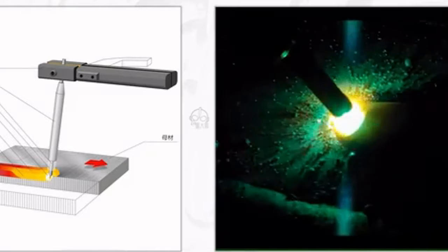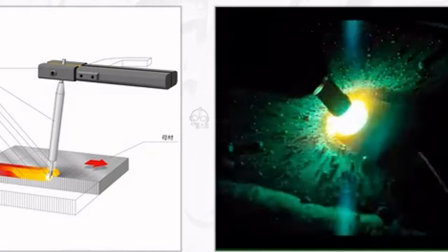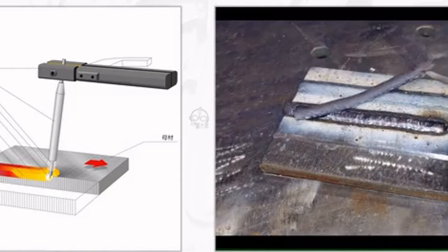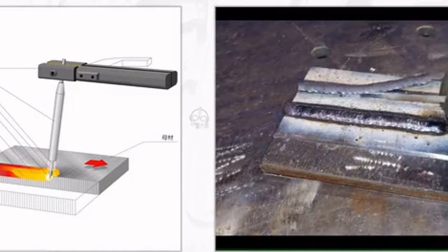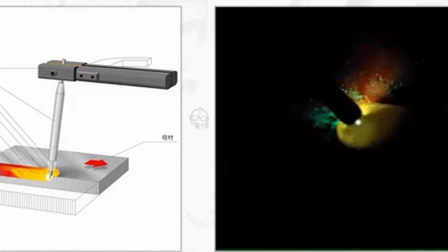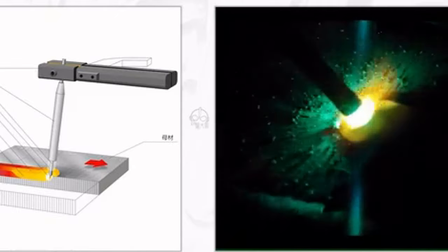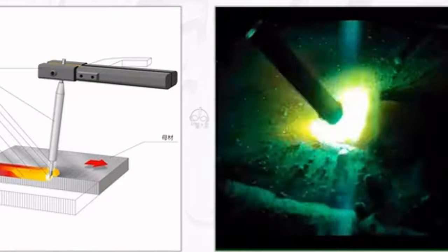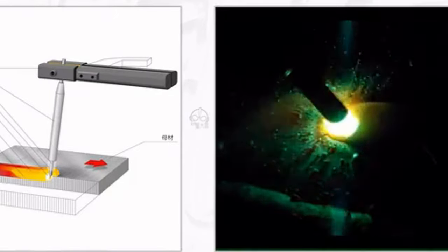During the melting welding process, if the atmosphere directly contacts the high-temperature molten pool, the oxygen in the atmosphere will oxidize the metal. Nitrogen, water vapor, etc., which enter the molten pool, will form defects such as pores, slag inclusions, and cracks. Therefore, a protective gas is needed to isolate the air. In manual arc welding, the electrode coating is generally decomposed to produce a protective gas and slag to isolate it from the atmosphere.